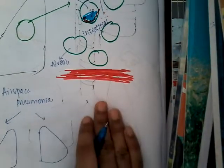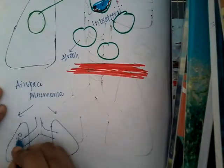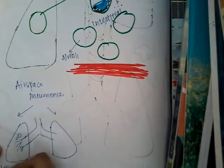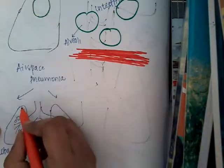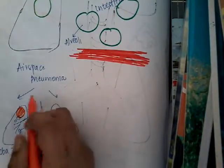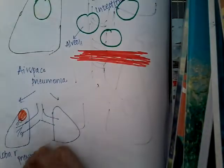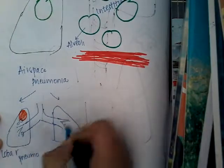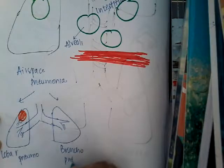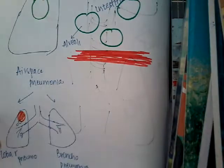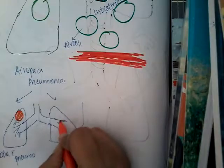Airspace pneumonia can be of two types. Air spaces include the bronchi, bronchioles, small bronchioles, and alveoli. The first type is lobar pneumonia, where a part of the lobe is involved — in this, the bronchi are not affected, only the alveoli are involved. The second type is bronchopneumonia, where mainly the bronchi are involved.